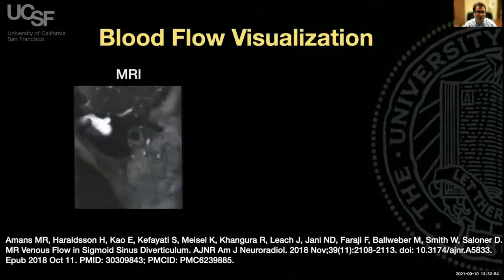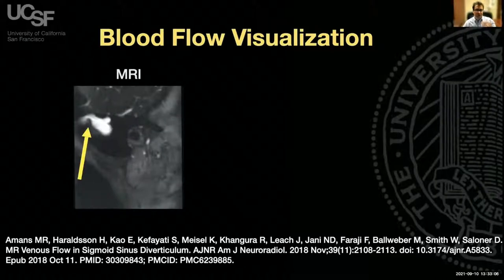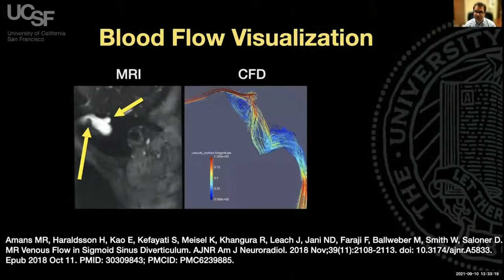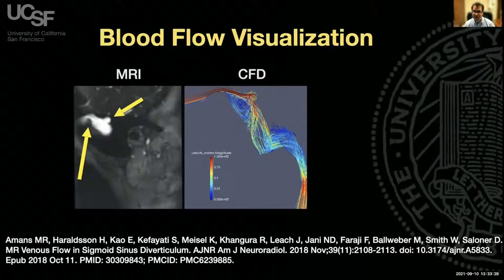Now let's talk about blood flow visualization. This is a sagittal MRI image showing the transverse sinus and a transverse sinus stenosis, with a sigmoid sinus diverticulum projecting anteriorly just downstream. We can measure blood flow going into the transverse sinus and use it to develop a computational model to visualize blood flow—called computational fluid dynamics. What we see is a jet of high-velocity blood flow through the stenosis directed into the sigmoid sinus diverticulum, suggesting the flow jet caused by the stenosis creates the sigmoid sinus wall defect.